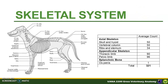Likewise, it is considered a hematopoietic tissue, as the bone marrow manufactures blood cells. In total, there are 321 bones present in dogs. The table summarizes the average count per segment of the skeletal system. Note that this is just an average count — the number can vary, especially at the vertebral column.